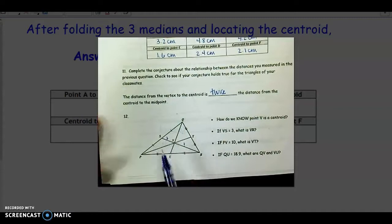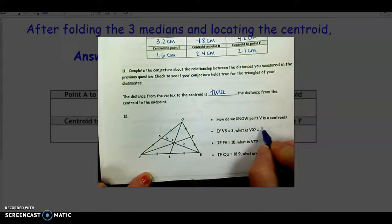So remember, we just made a conjecture that this distance from the vertex to the centroid is twice as much as from the centroid to the midpoint. So if this is 3, this is twice as much, so it would be 6.